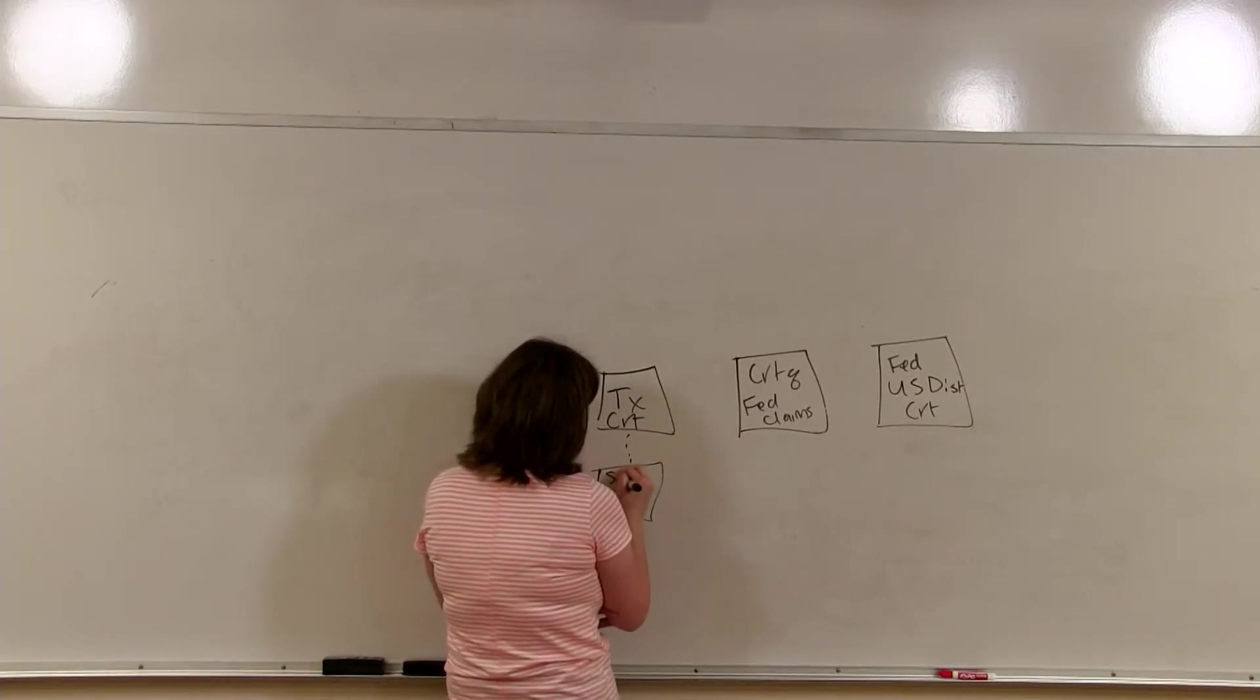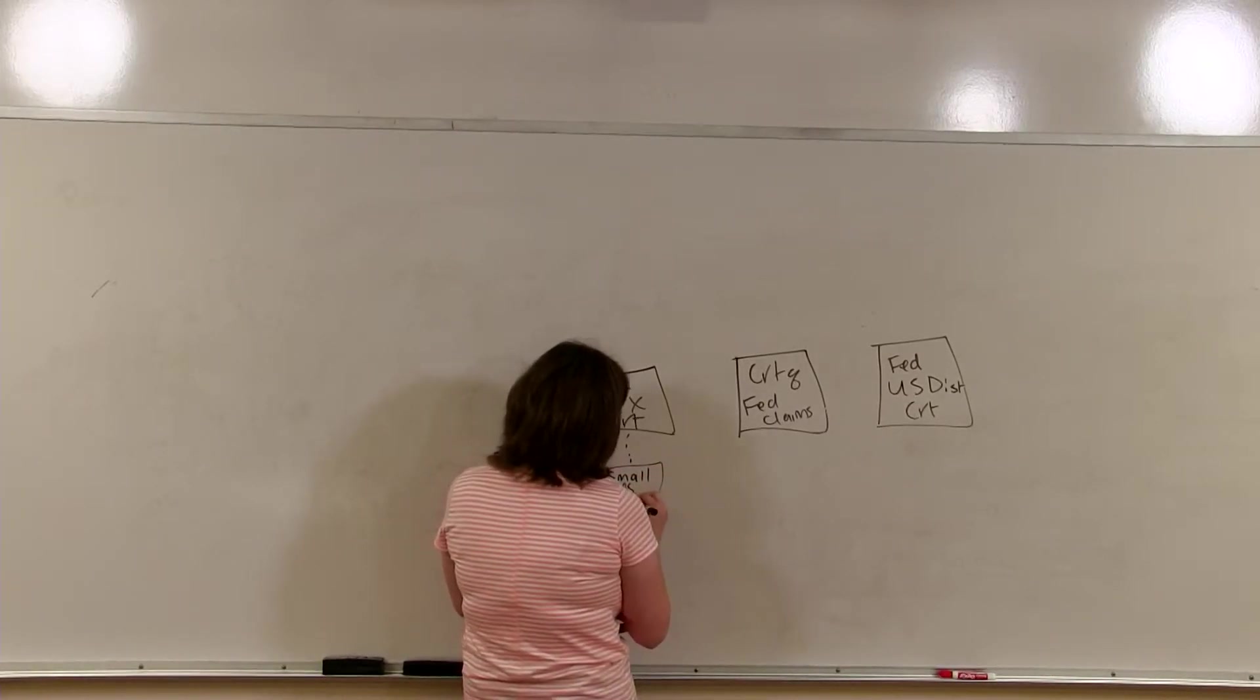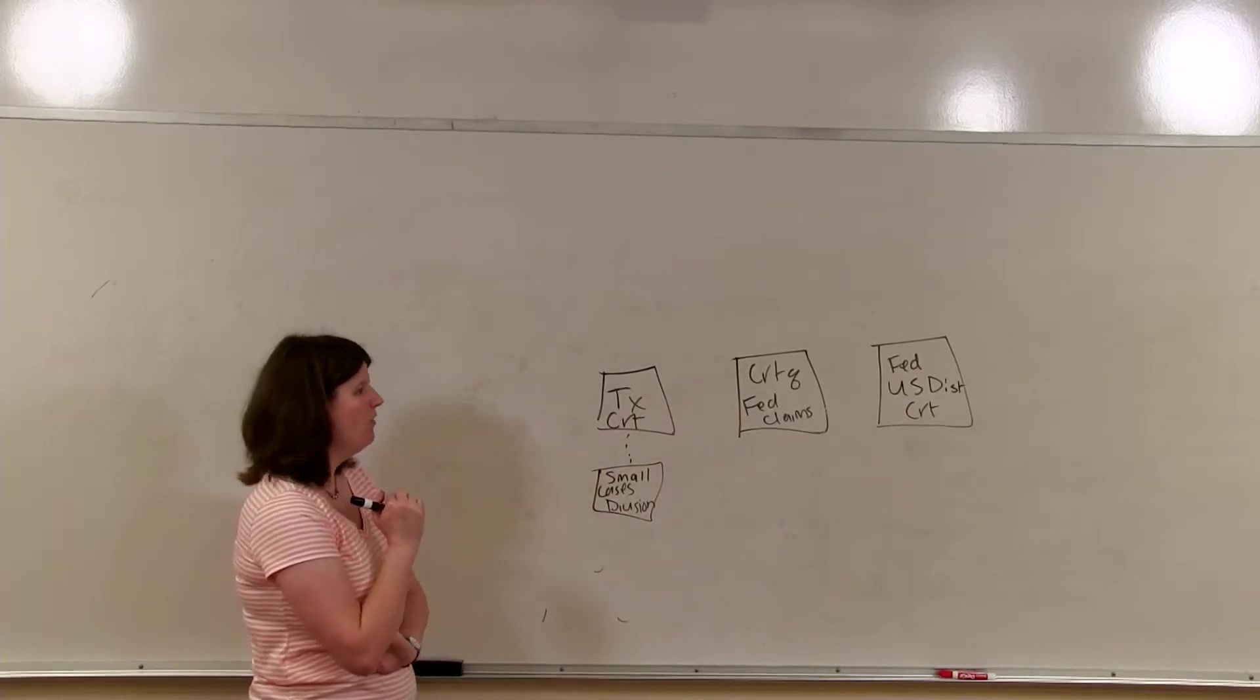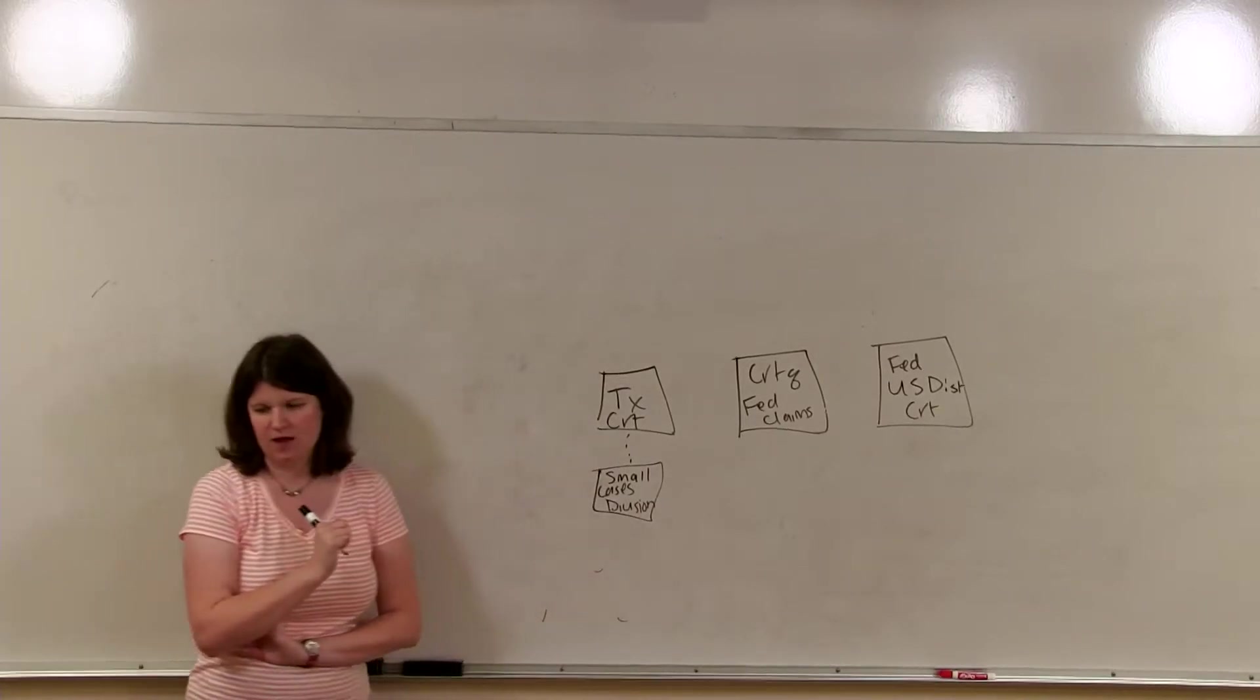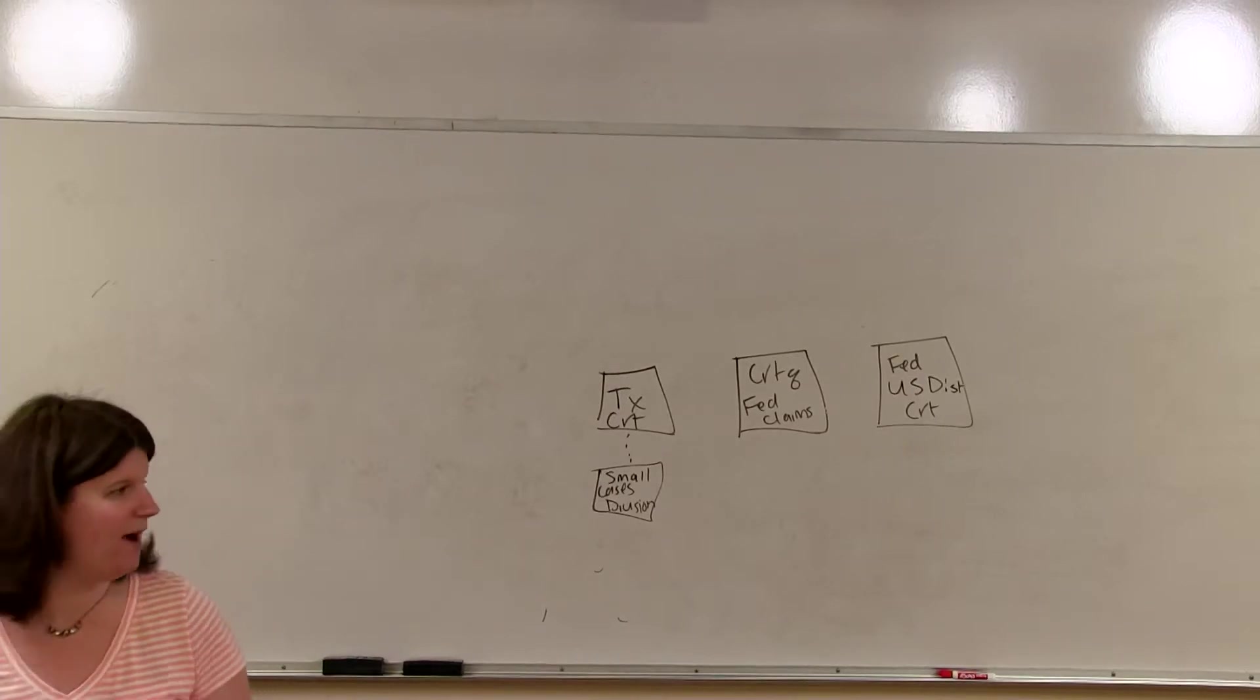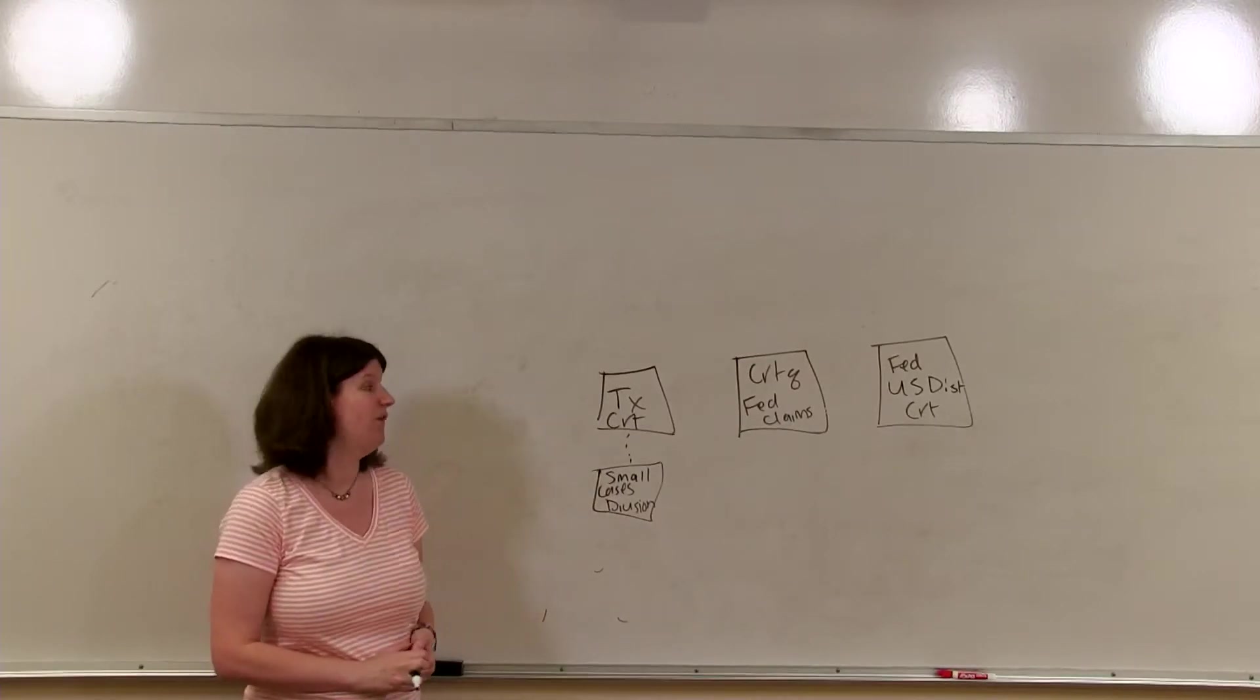We have the tax court. We have the court of federal claims. We have the federal circuit. And these are the different courts that a taxpayer can go through. There are a couple other that I will mention. This one is the small cases division. This is part of the tax court, but you cannot appeal to the tax court if you don't like your decision. This is kind of like a tax version of a small claims court. The amount at issue has to be less than $50,000. And like I said, you can't appeal it. Your decision is final.